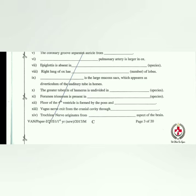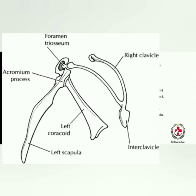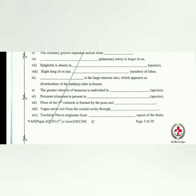The greater tubercle of humerus is undivided in the dog. Foramen triosseum is present in fowl — it is formed by three bones: clavicle, scapula, and coracoid.